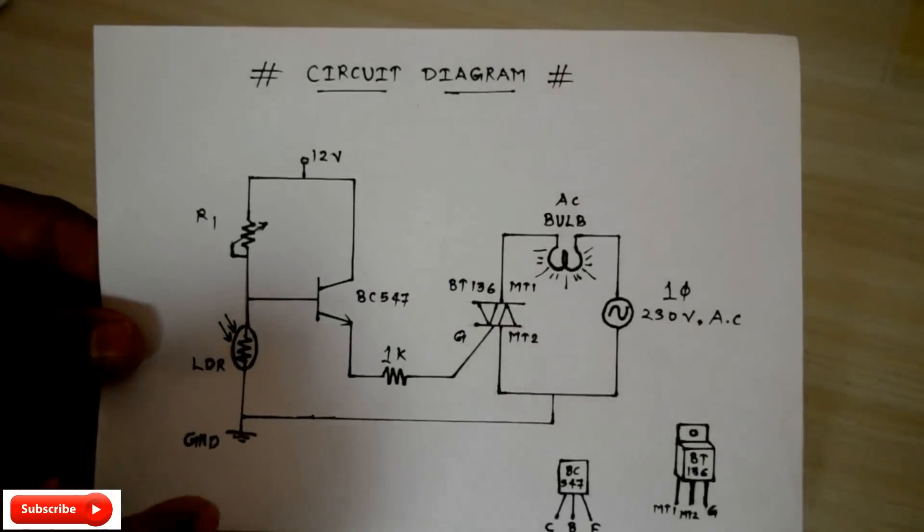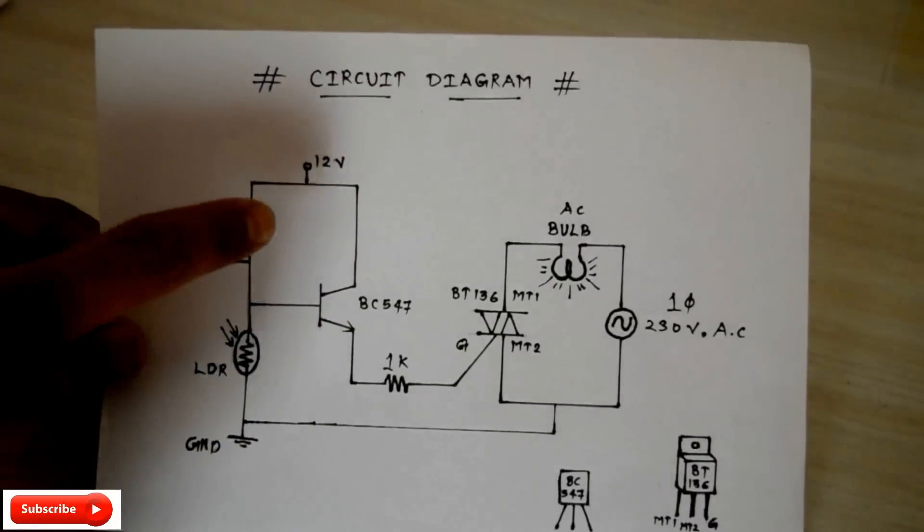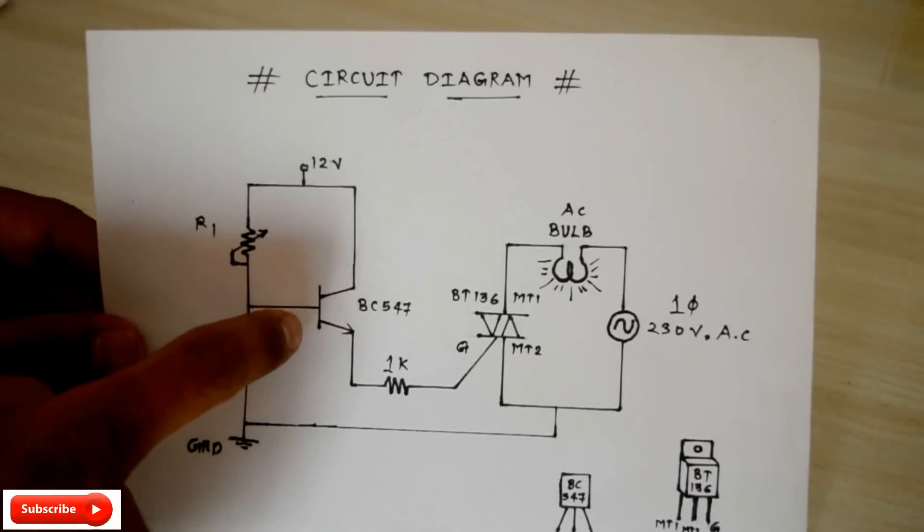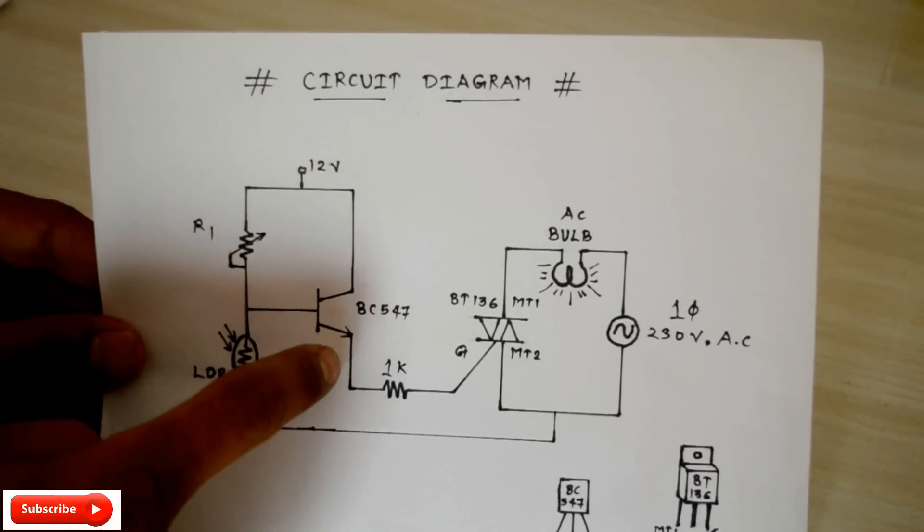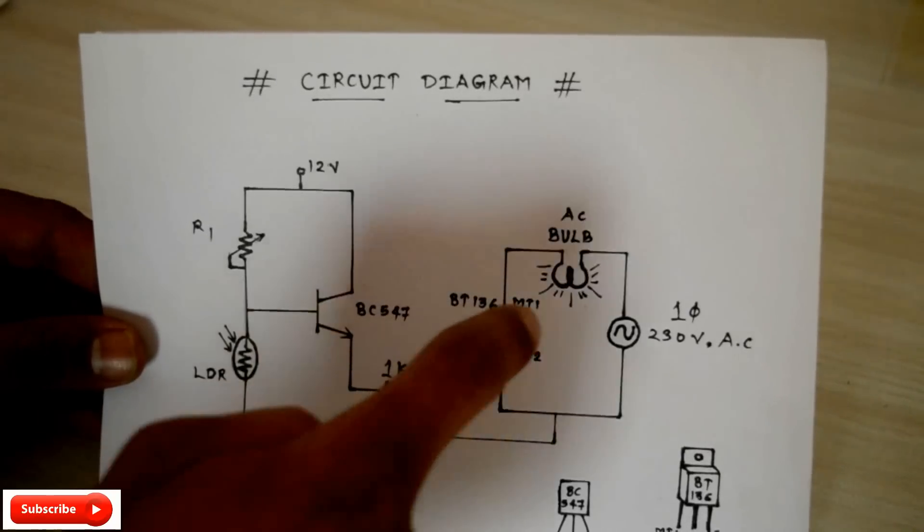But if darkness is increased at sufficient level, then the resistance of LDR gets increased. Due to this, most amount of current flows towards the base terminal of transistor. Due to this, transistor is turned on and TRIAC is triggered through the gate terminal. That's why the bulb is turned on.